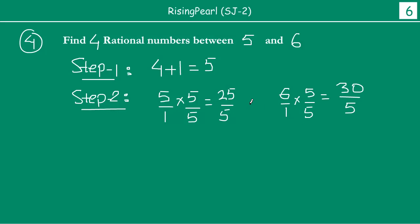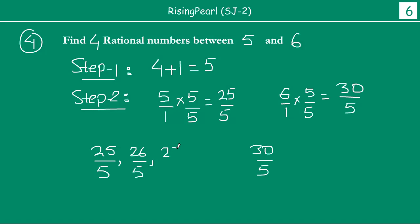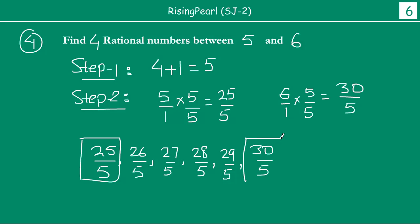So हमें अभी दो नई numbers मिलती हैं: 25 by 5 and 30 by 5. अभी इन numbers के बीच हमें हमारी 4 rational numbers लिखनी हैं. Notice करिए कि denominator is the same — 5 and 5 — and numerator 25 से बढ़के 30 तक जा रही है. So we can write 26 by 5, 27 by 5, 28 by 5, and 29 by 5.